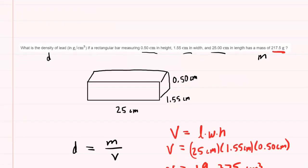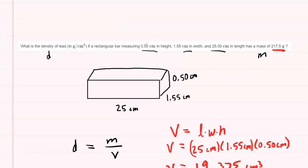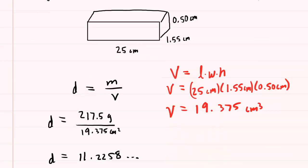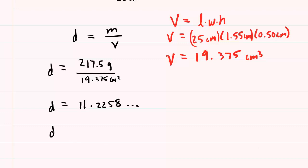If you look back at the given quantities in the question, the quantity with the fewest number of significant figures was this one. This has two significant figures after the decimal point. So we'll round our answer to two significant figures as well.